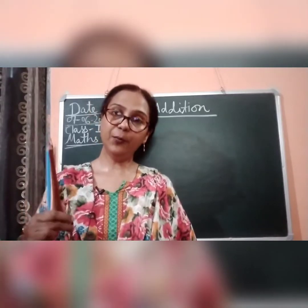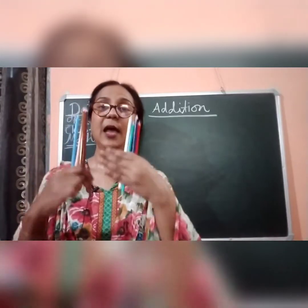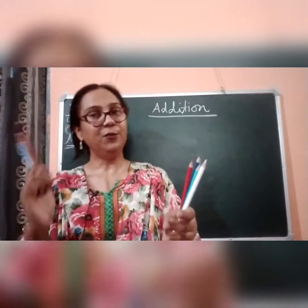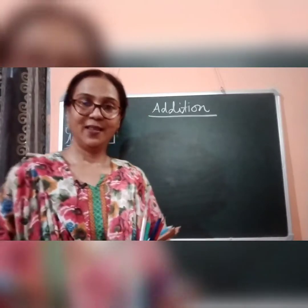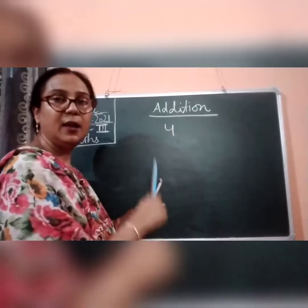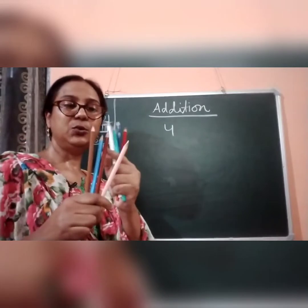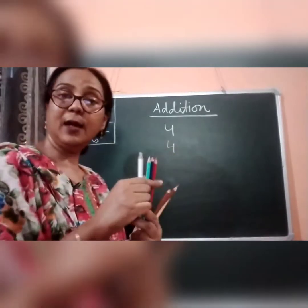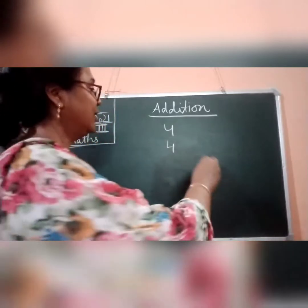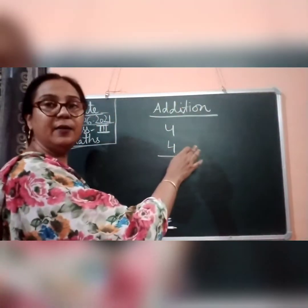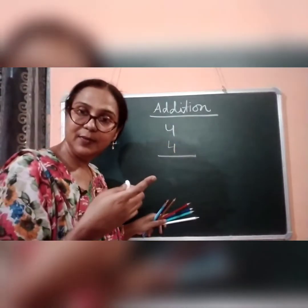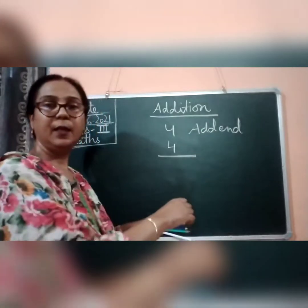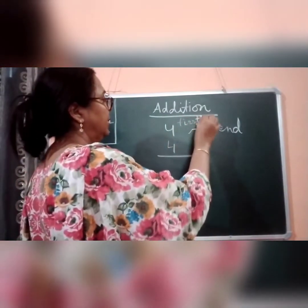In one hand I have four pencils and in the other hand I also have four pencils. So what is the sum of four pencils and four pencils? The numbers which are being added are called addends — this is the first addend and this is the second addend. This is the plus sign, the symbol of addition.